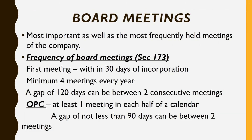The first one is board meetings. The most important as well as the most frequently held meetings are known as board meetings. Regarding the frequency: the first meeting should be conducted within 30 days of incorporation of a company, there should be a minimum of four meetings every year, and a gap of 120 days can be between two board meetings.